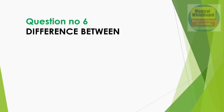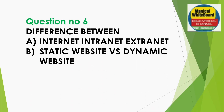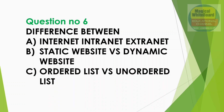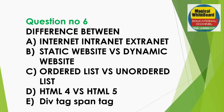Question number 6: The differences between internet, intranet, extranet, static website, and dynamic website. Also: ordered list, unordered list, SQL code, DL file, div tag, span tag — discuss differences between these.